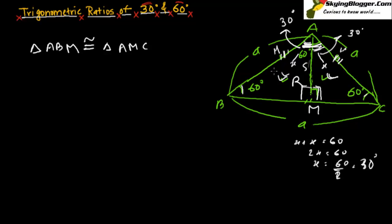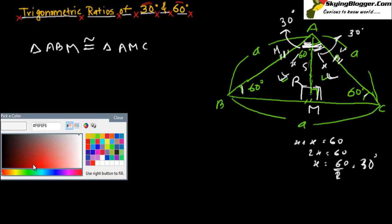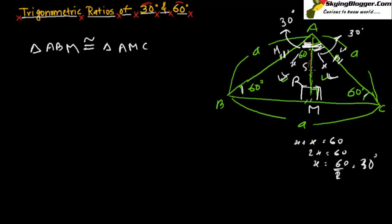Now we need to find all the side values in this triangle. We need to find the value of AM. Since both halves BM and MC are equal and BC = a, BM = a/2. Triangle AMC is a right-angle triangle, so we apply Pythagoras' theorem.